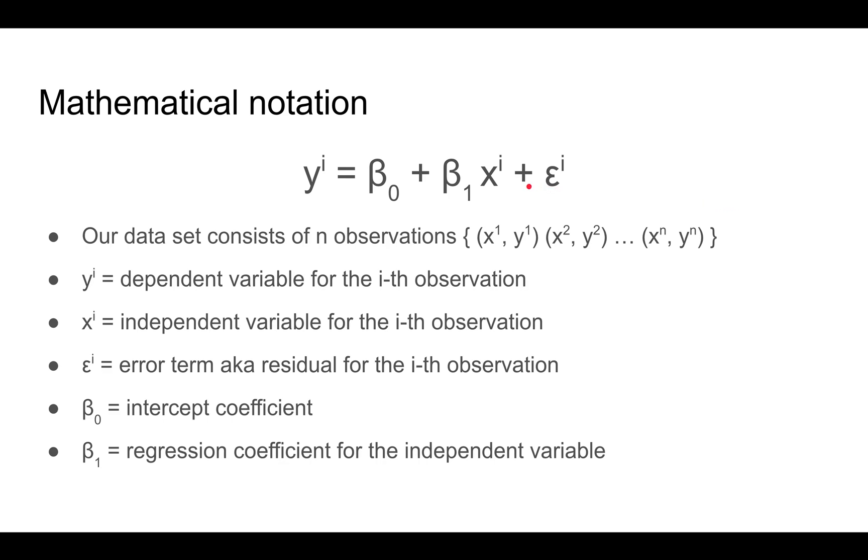Here's the mathematical notation we use for simple linear regression. We have some observed values: x1, y1, x2, y2, up to xn, yn. So there's some data for which we know both x and y, but we might want to make predictions where we know x but don't know y. The value of y equals the intercept plus the coefficient times the x value plus some error or residual term, because the line might not fit the data exactly.